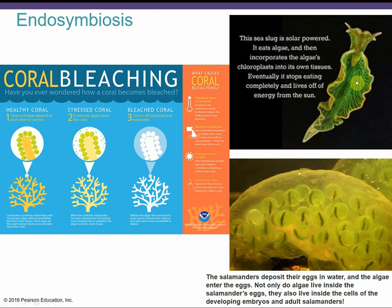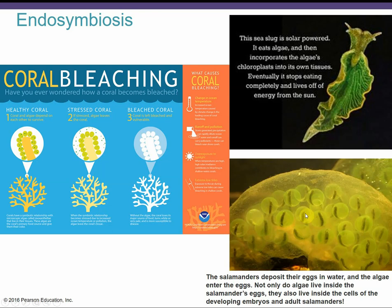Another interesting example is the solar-powered sea slug. This sea slug eats algae and takes the chloroplasts from those algae cells, incorporating them into its own tissue — essentially harvesting the organs from its food. Eventually, sea slugs can accumulate enough chloroplasts in their tissues that they don't have to eat at all and become completely photosynthetic animals. A similar example involves algae and salamanders: algae actually grow in salamander eggs, living and developing inside the salamanders' cells. Given enough time, it looks like evolution is tending toward photosynthesis in the animal kingdom as well.